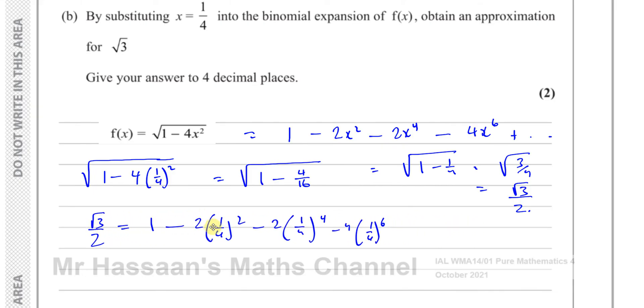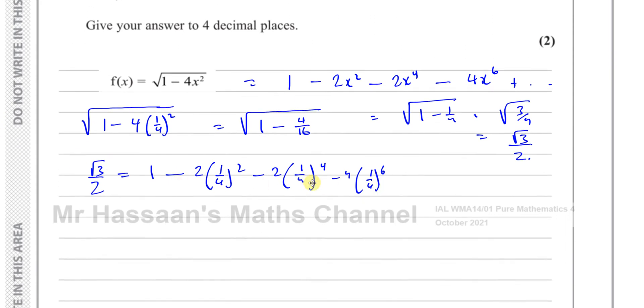So now I can calculate what this is, and then I need to multiply by 2. So root 3 would be equal to basically 2 times all of this. So root 3 is going to be 2 times all of this: 1 minus 2 over 16, which is 1 over 8, minus 2 times a quarter to the power of 4. We'll just put it in a calculator, we don't need to calculate all that. I can just put this all in the calculator and then find the answer.